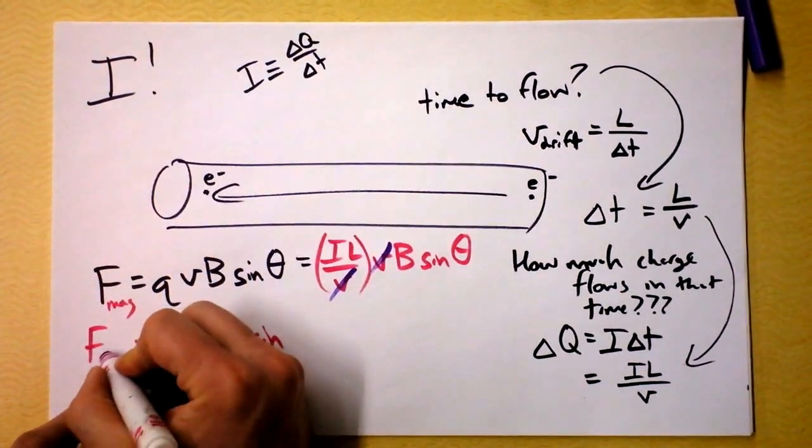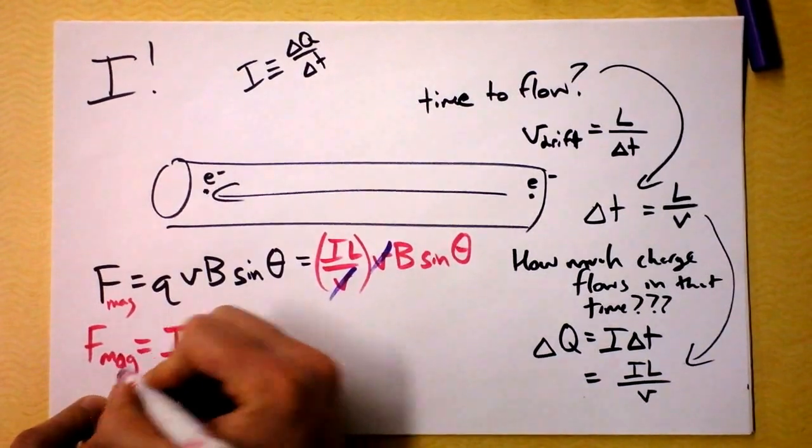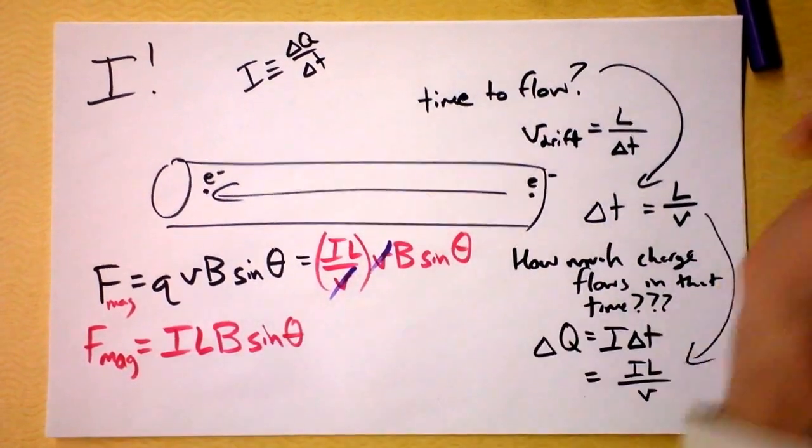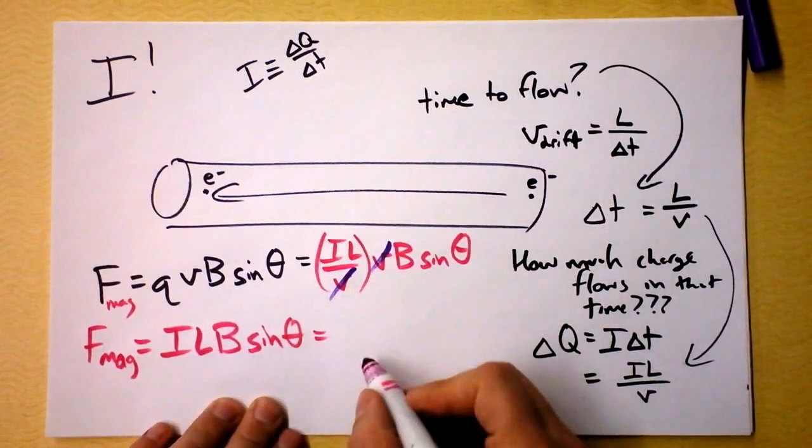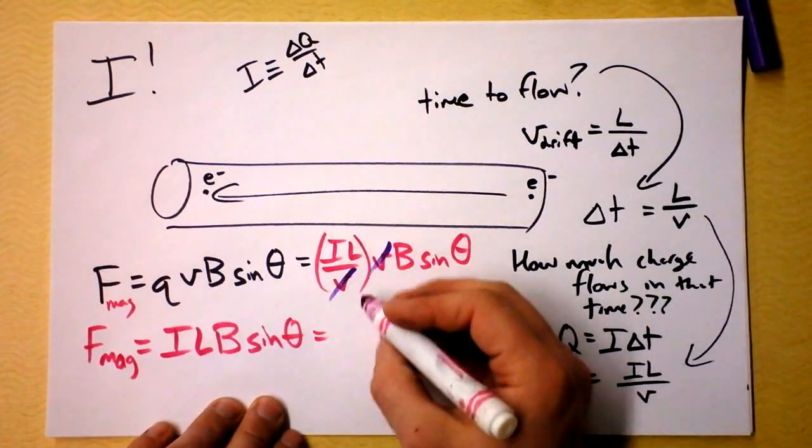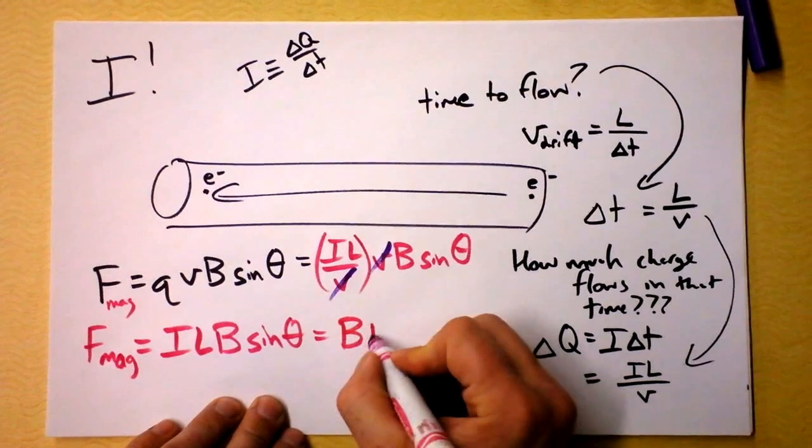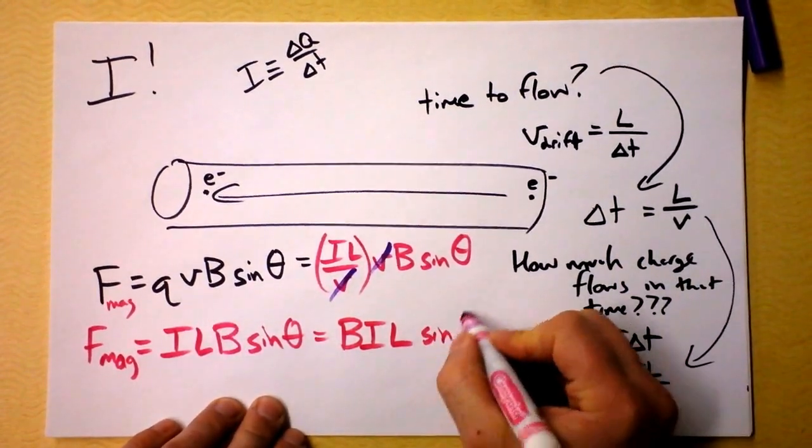This is the magnetic force. Magnetic force is ILB is not a very nice thing to say to someone. You would in fact prefer to use the commutativity of multiplication to say that magnetic force is BIL. Hi, magnetic force. I'm BIL. No. You're magnetic force. You're BIL. I'm Doctor.